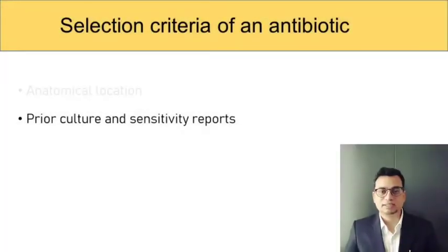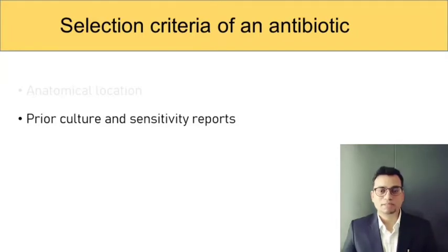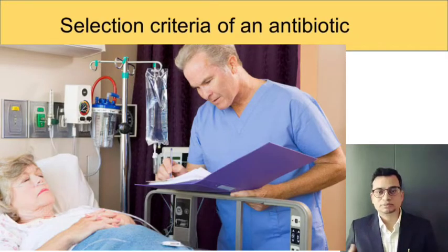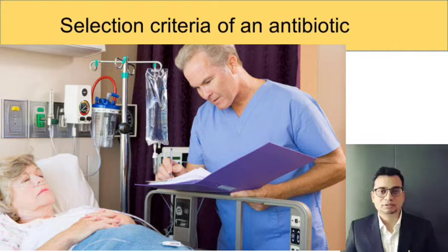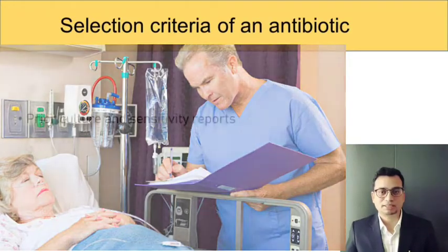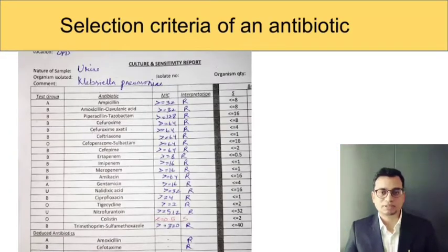The second criteria is the prior culture and sensitivity reports. If you know that a patient coming to you had developed a similar infection in the past, or if there is a history of previous hospitalization, you must look at culture reports to see whether the organism is resistant to certain antibiotics. It will help you to select the most appropriate antibiotic to which the organism will be most sensitive, and hence the clinical and microbiological success will be maximum.